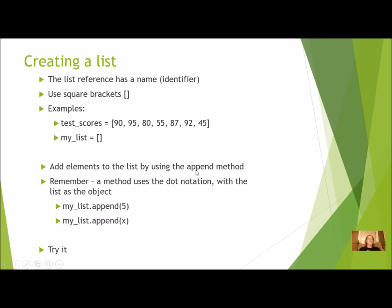To add elements to the list, use the append method. Since it is a method, it uses dot notation — the list is the object, so you write my_list.append() with parentheses. You pass in the argument of what you want to append: a literal value like 5, or a variable like x. As long as x already has a value, you can append it. The list object goes in front of the dot, and append is the method name.